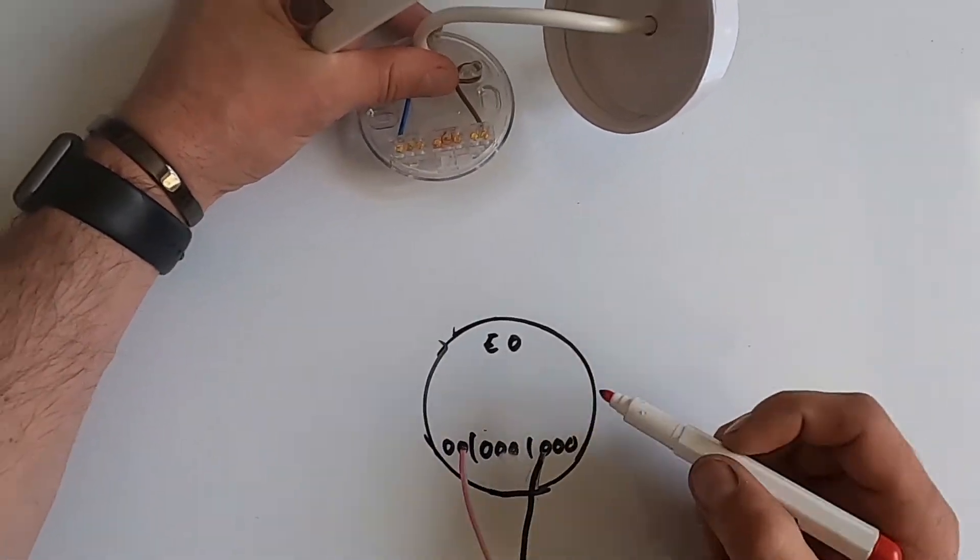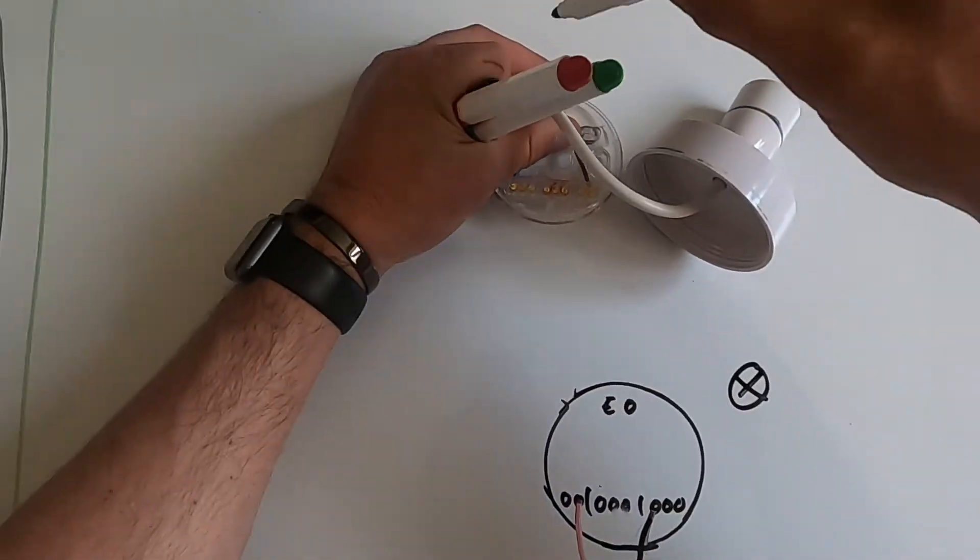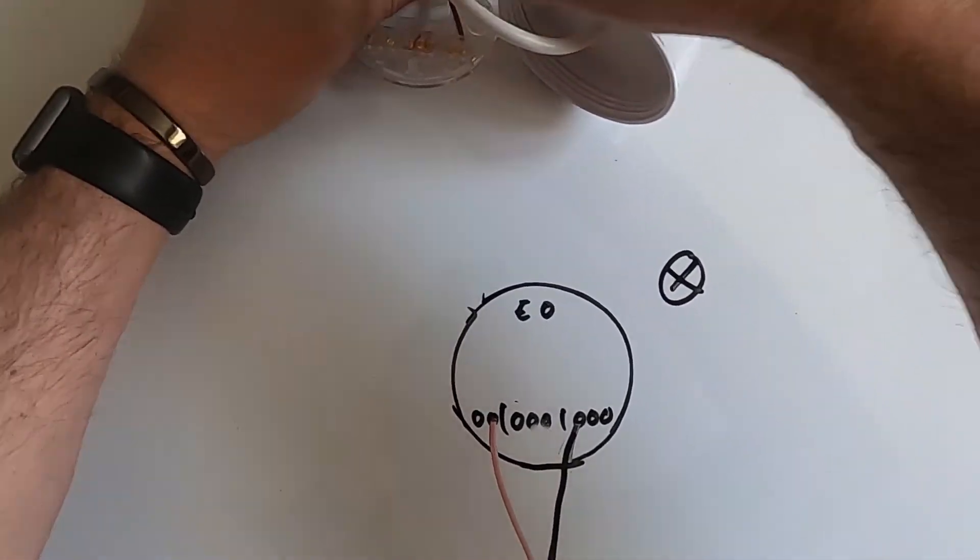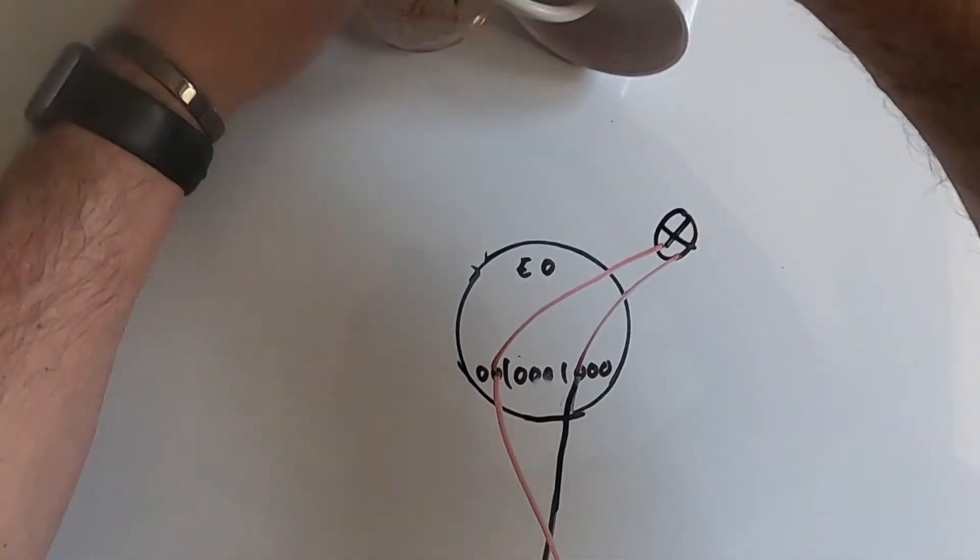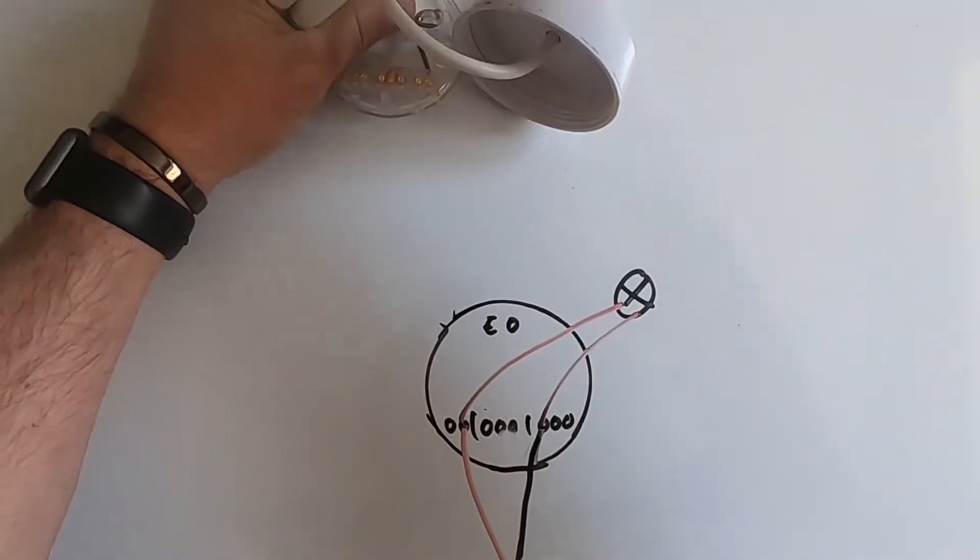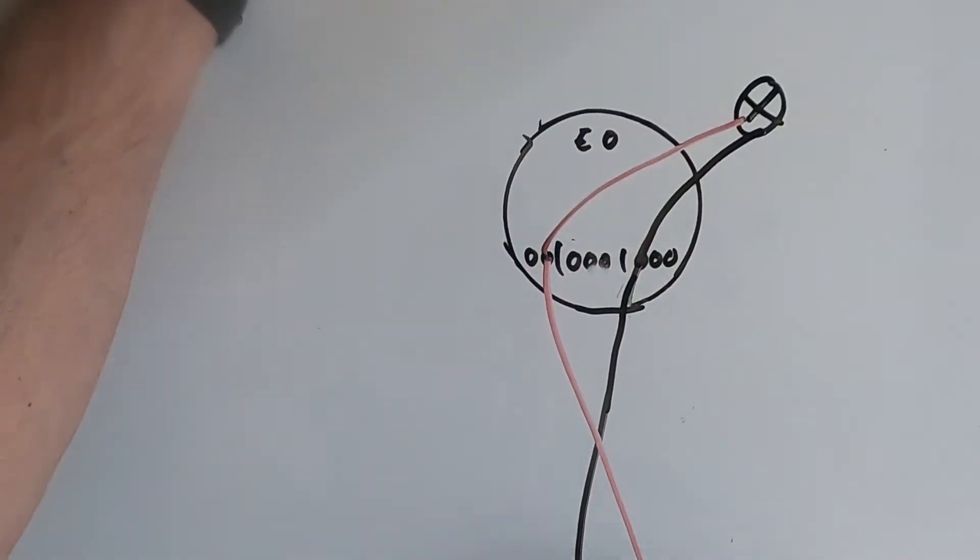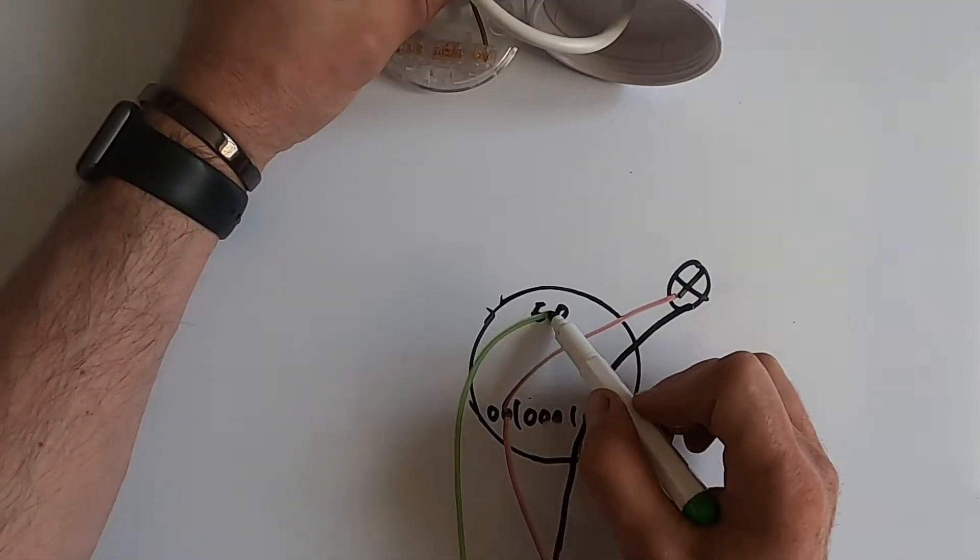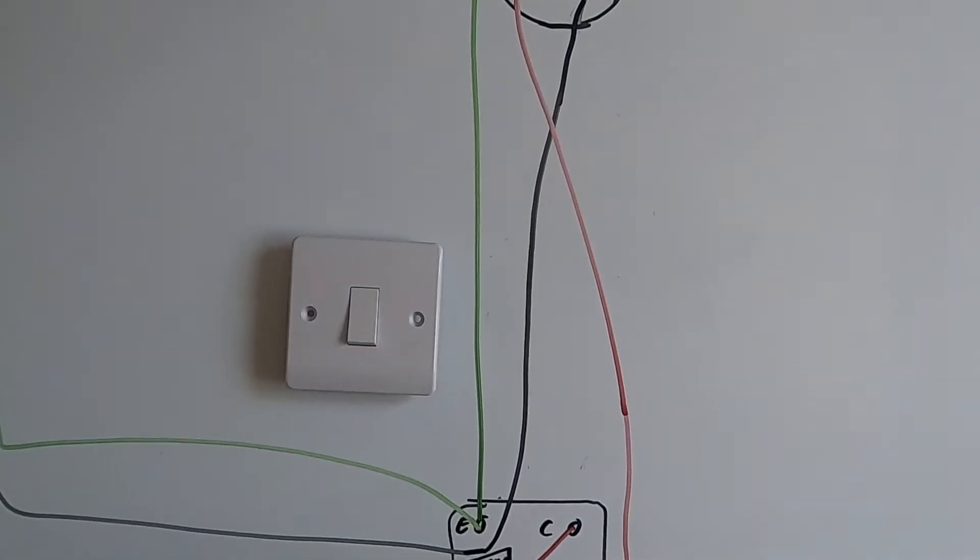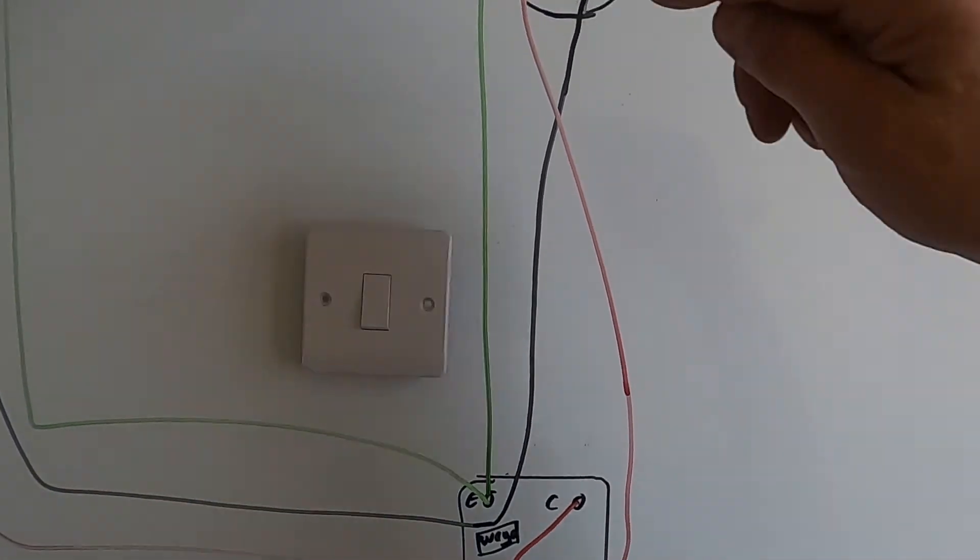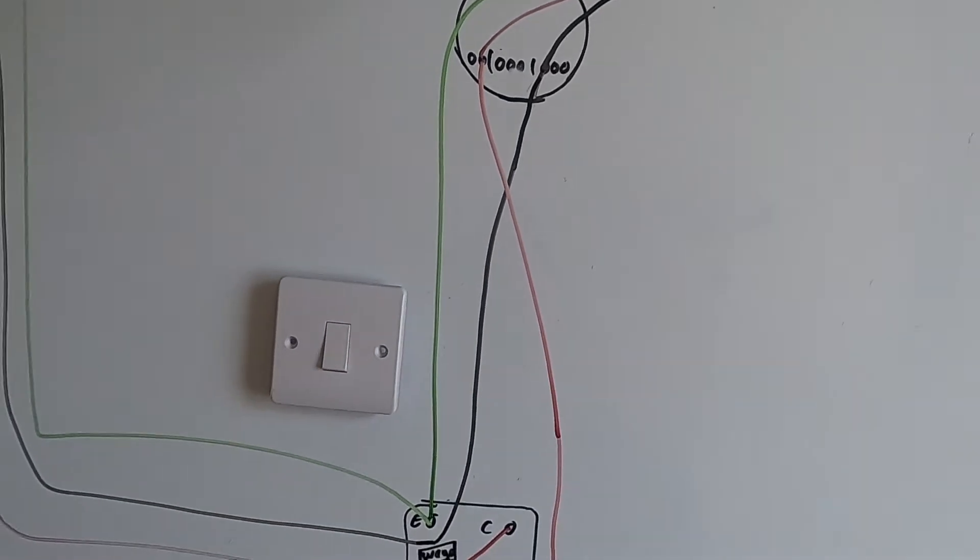So we've already got a live and neutral, and then the earth can also be common. So what you've got is a live, neutral, and earth at the switch, and then a live, neutral, and earth at the light. But that is a switched live up there.